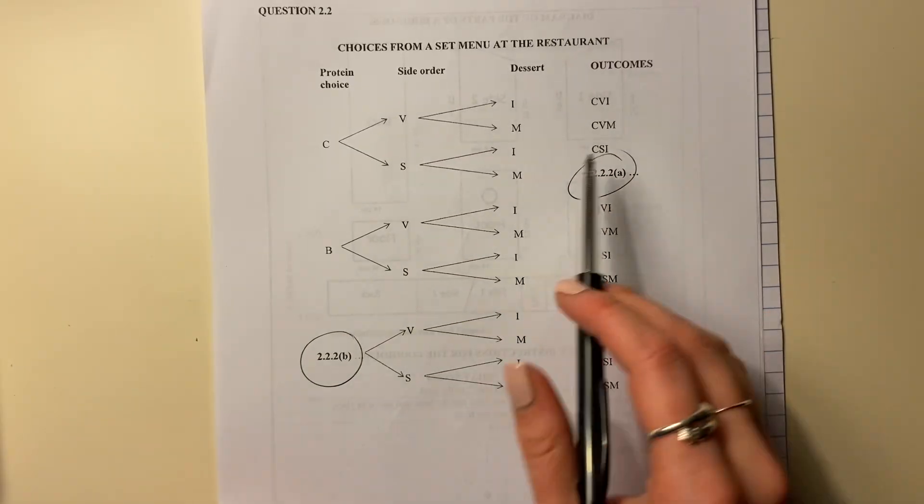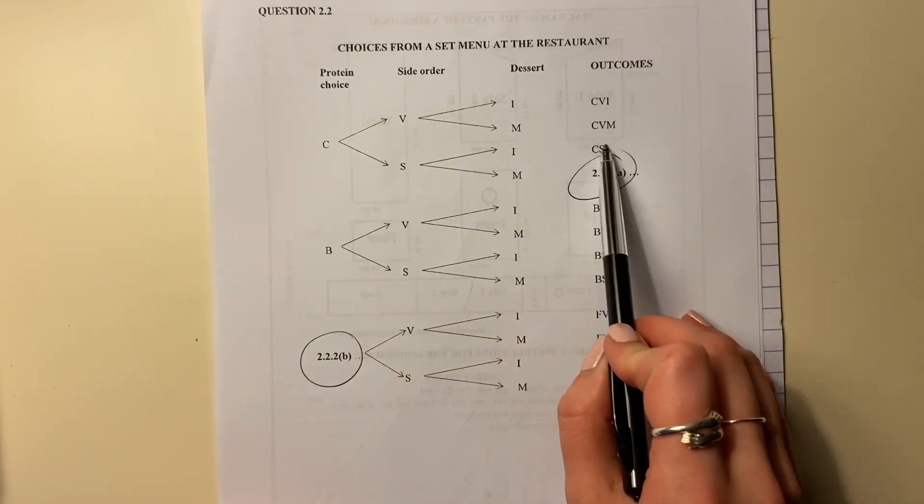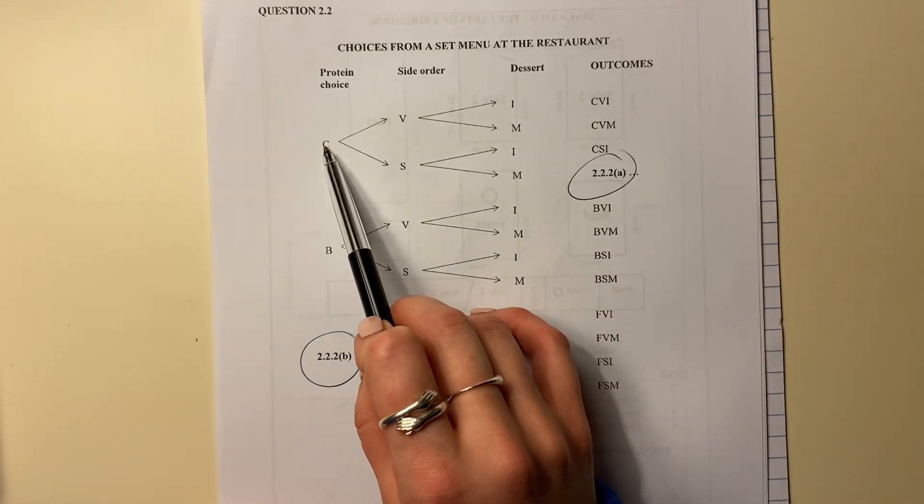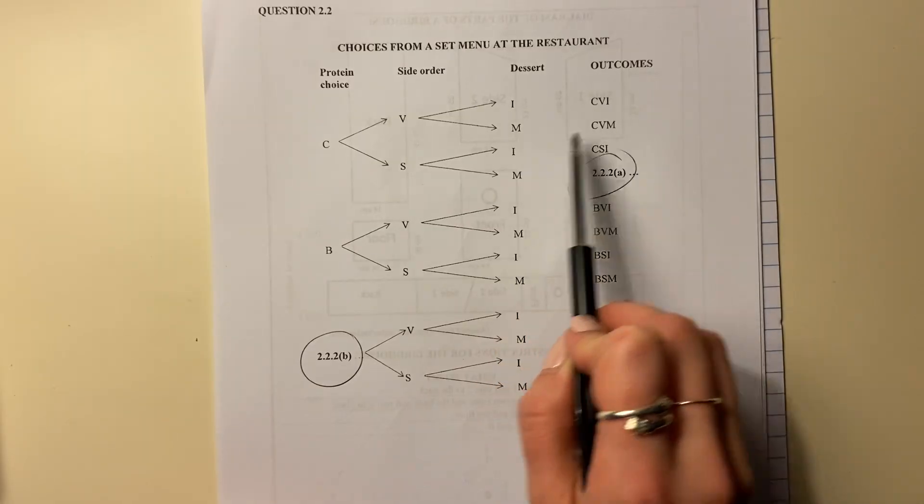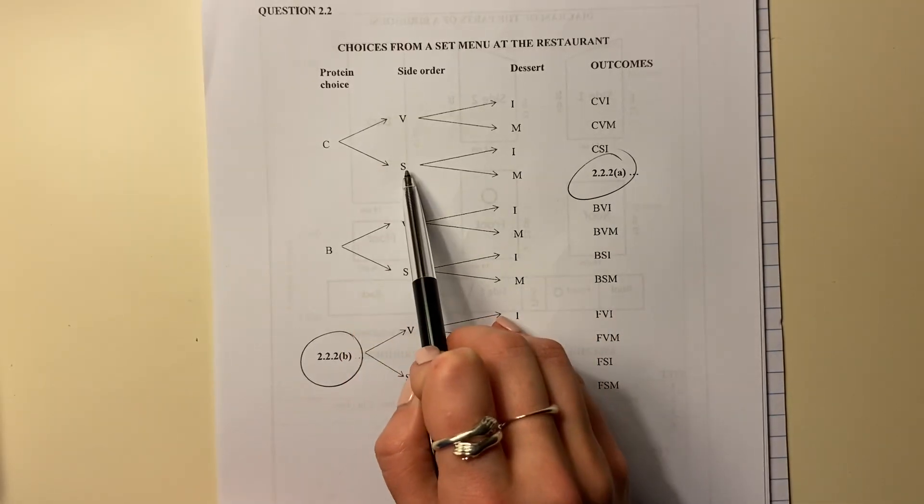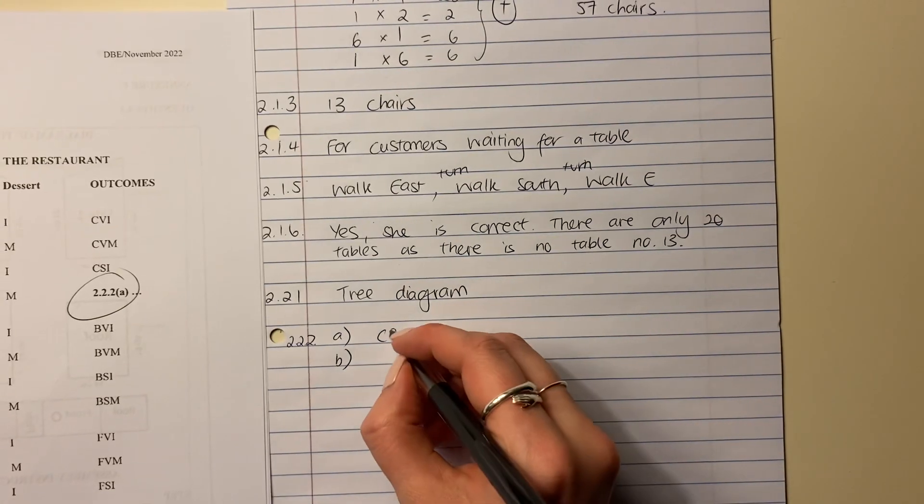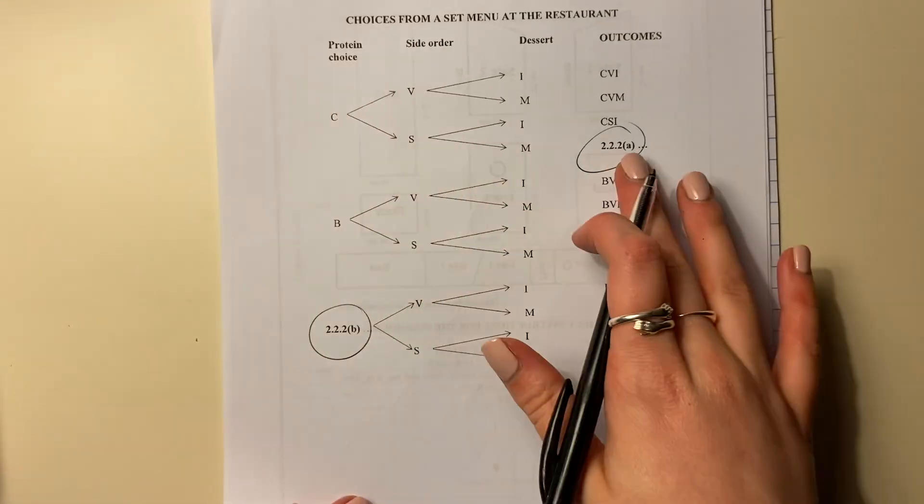Okay, this one - remember, look here. These here indicate the pathway. So you see a CVI, and that's why you've written it there. CVM, written it there. So this one over here is going to be CSM. CSM, that's the pathway.